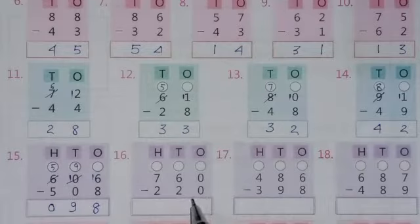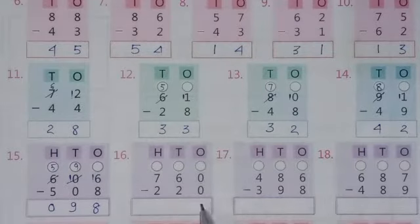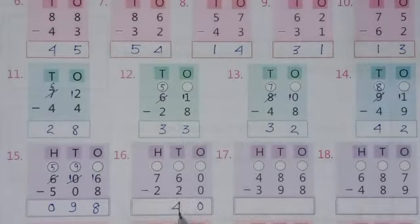Next question number 16: 0 minus 0 equals 0. 6 minus 2 equals 4. 7 minus 2 equals 5.